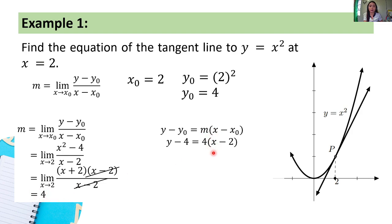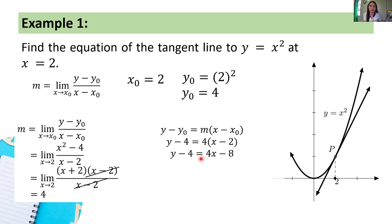So we have 4 times the quantity (x minus x₀). Since x₀ = 2: 4(x − 2). Let's further simplify by distributing 4. We will have y minus 4 = 4x minus 8.